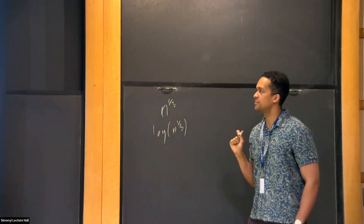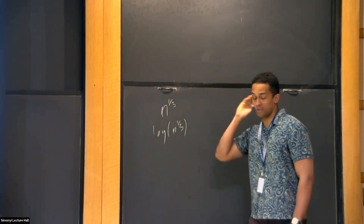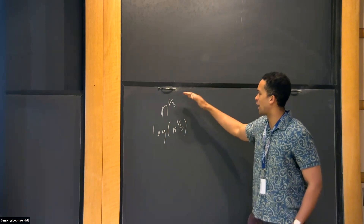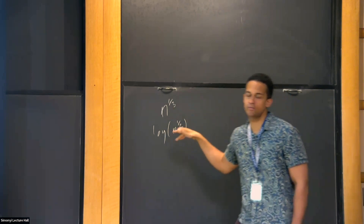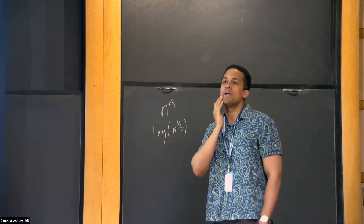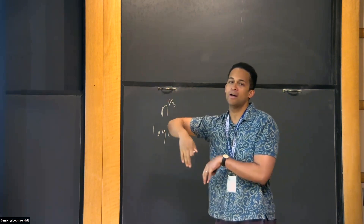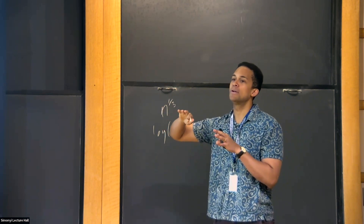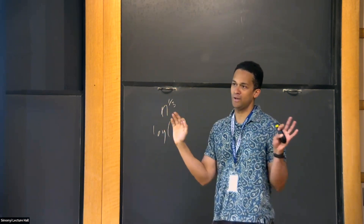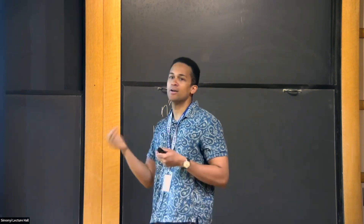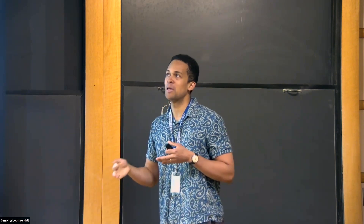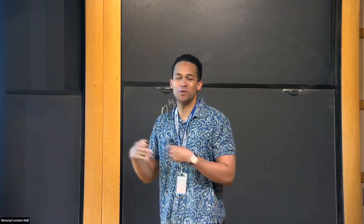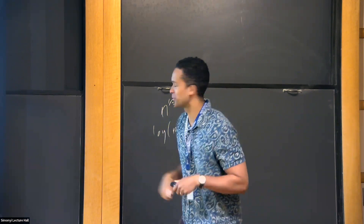Something I realized only recently: because of this nice polynomial girth stuff, if you did our construction in the original Alon-Ganguly-Srivastava paper, you get the same result except using their construction — you'd get high-girth, almost Ramanujan graphs with lossy vertex expansion and localized eigenvectors, which is kind of remarkable.